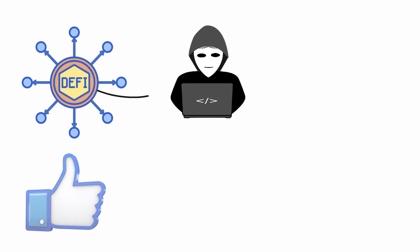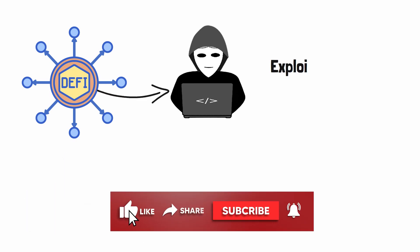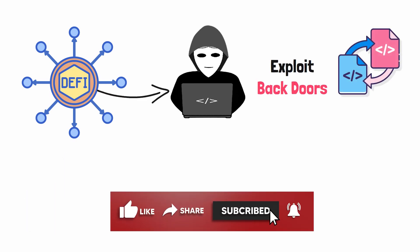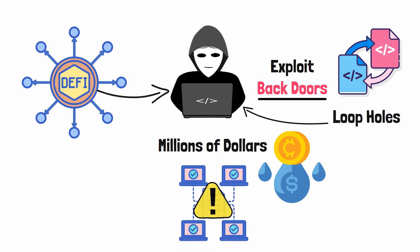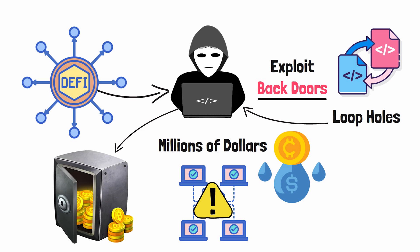A majority of hacks that take place in the DeFi space trace back to the fact that hackers can exploit backdoors in the code. These backdoors are loopholes that end up giving the hackers access to millions of dollars worth of liquidity inside the protocol. By the time the protocol realizes they are being hacked, the hackers already made off with the majority of the funds.